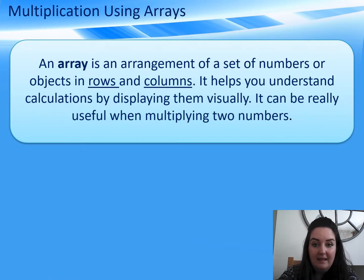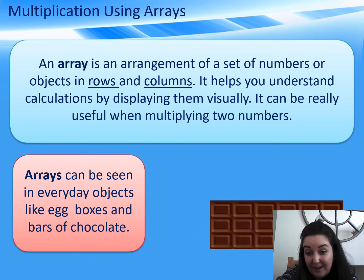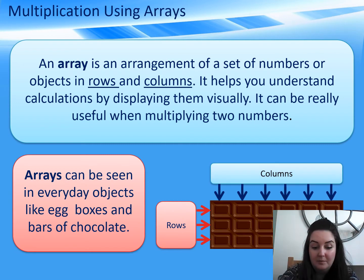An array is an arrangement of numbers, so remember they can go in rows and they can go down in columns. You can even actually see arrays in everyday objects like egg boxes and bars of chocolate. Remember, rows are going across, columns are going down.